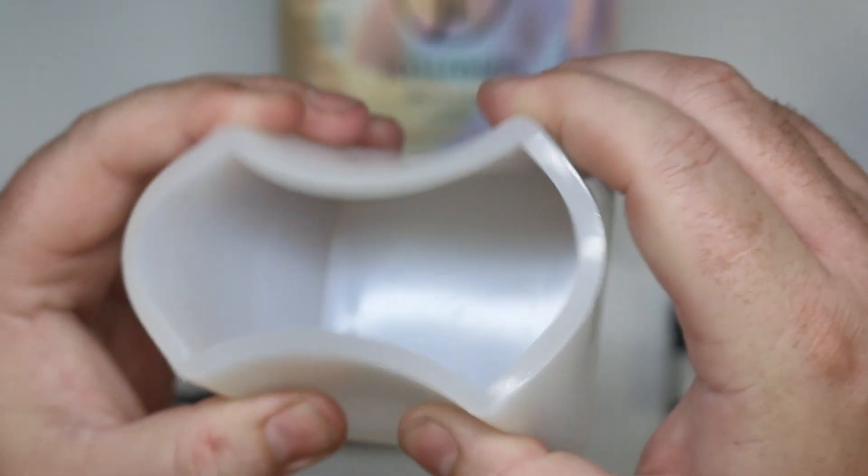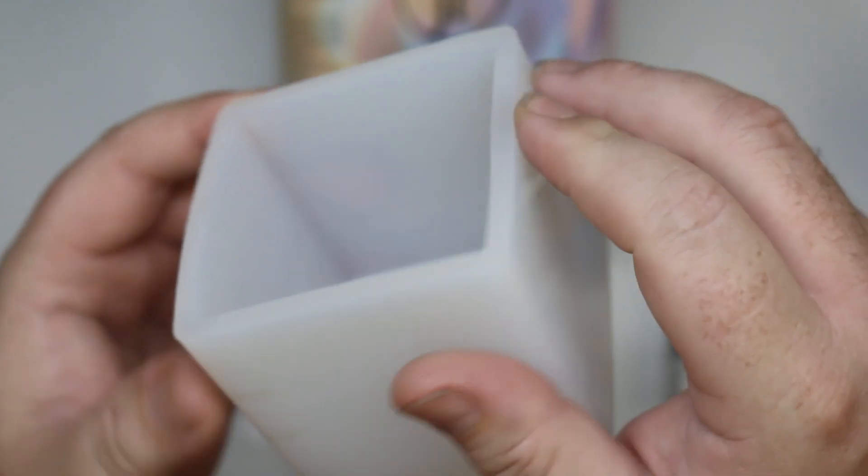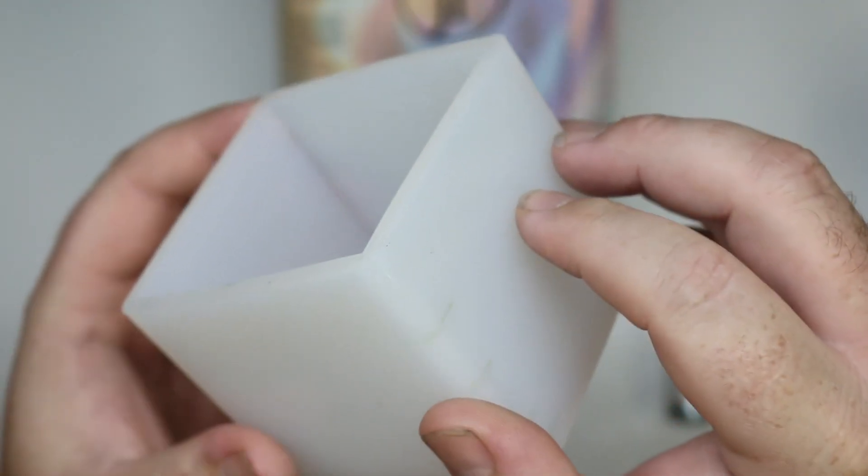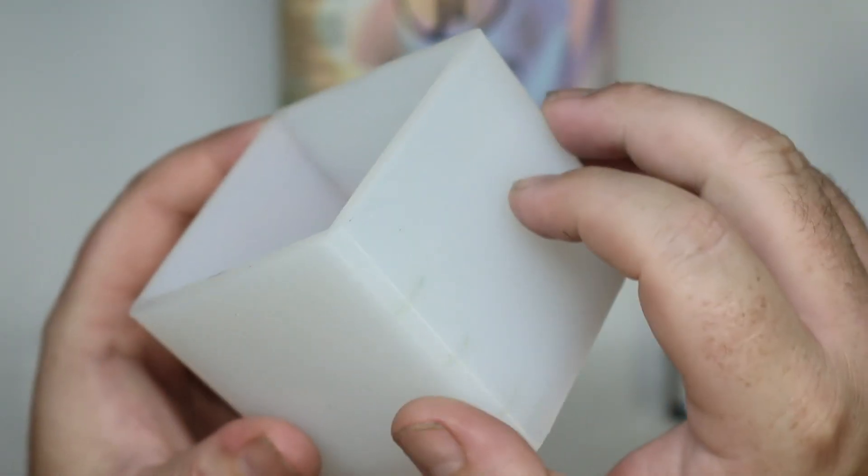I'll be using a square silicone mold. You can use any shape you want, you can find these online, they're not too expensive. This particular one I got from Solar Colour Dust.